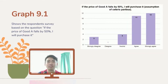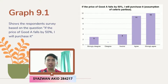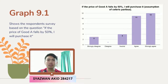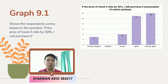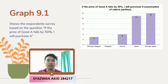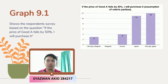Based on graph 9.1, the response to 'if the price of good A falls by 50%, I will still purchase it, by the assumption of ceteris paribus,' showed that most respondents strongly agreed. From 30 respondents, 12 strongly agreed and 11 agreed with the statement. The lowest response was 0 respondents who disagreed, followed by 3 respondents who chose strongly disagree.